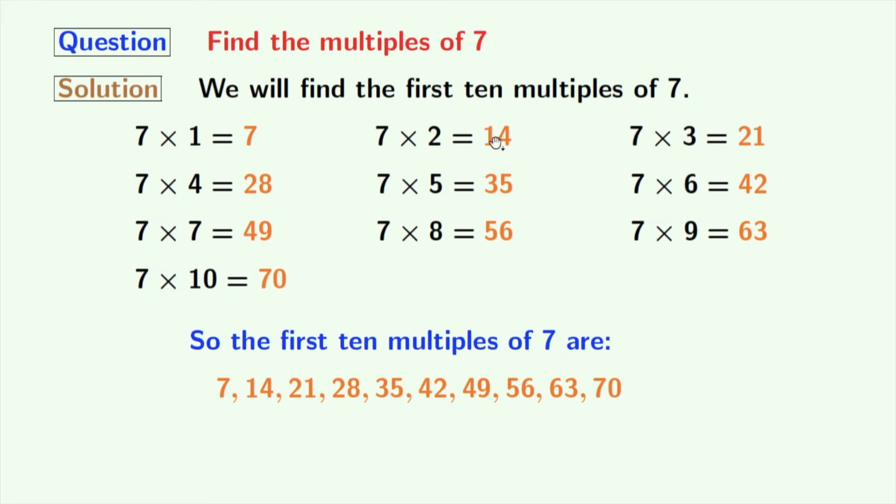7, 14, 21, 28, 35, 42, 49, 56, 63 and 70. In the same way, we can find the more multiples of 7.